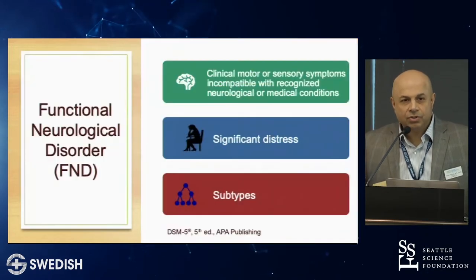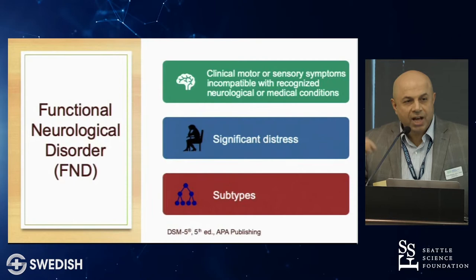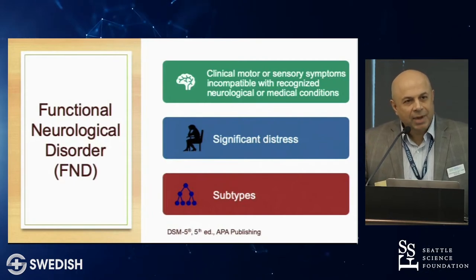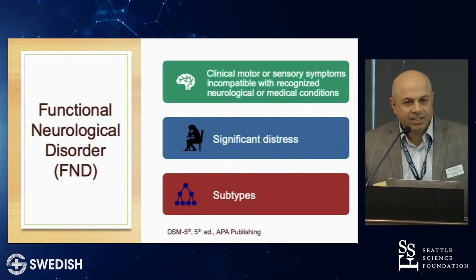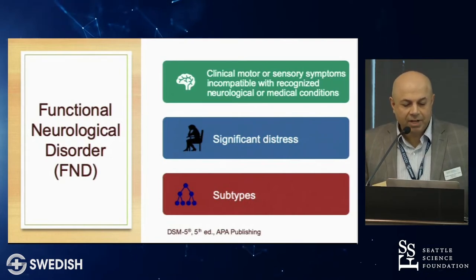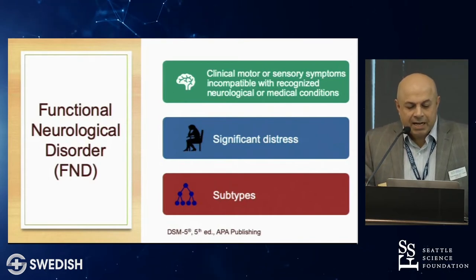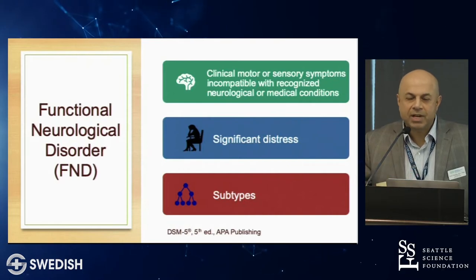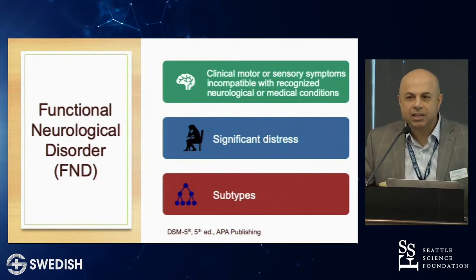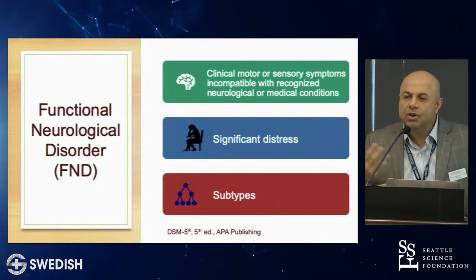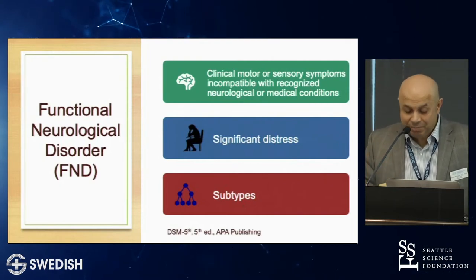Functional neurological disorder has several subtypes, and functional movement disorder is one of them. Functional neurological disorder is described as clinical motor and sensory symptoms due to an unexplained illness — medically unexplained symptoms that do not conform to any known medical disorders, cause significant distress, and have various subtypes.